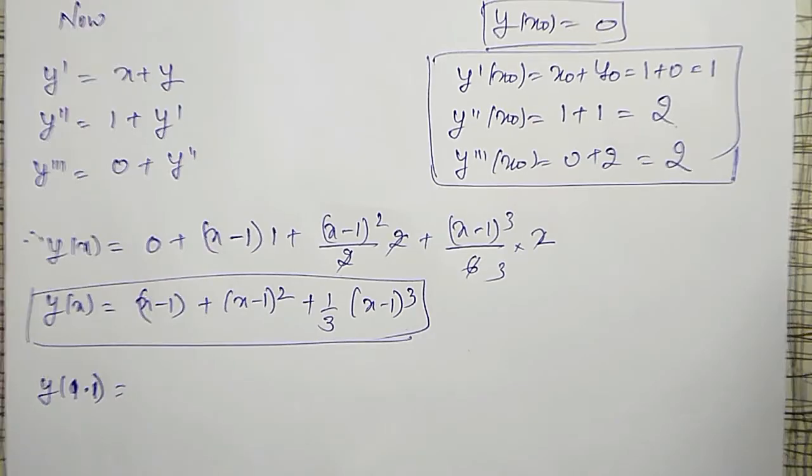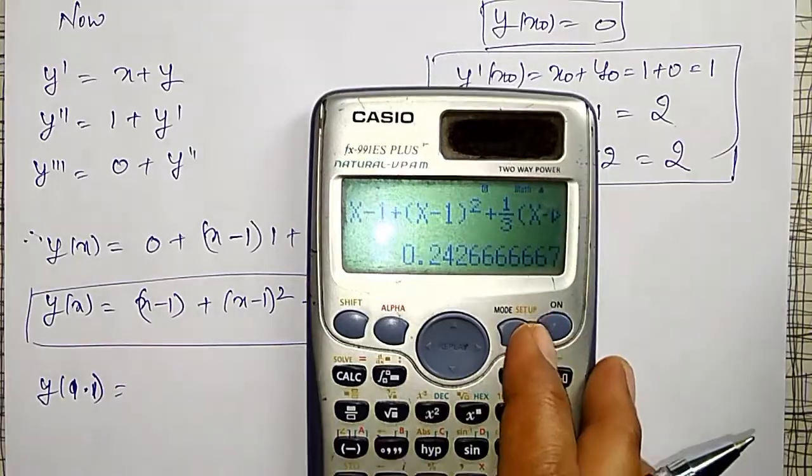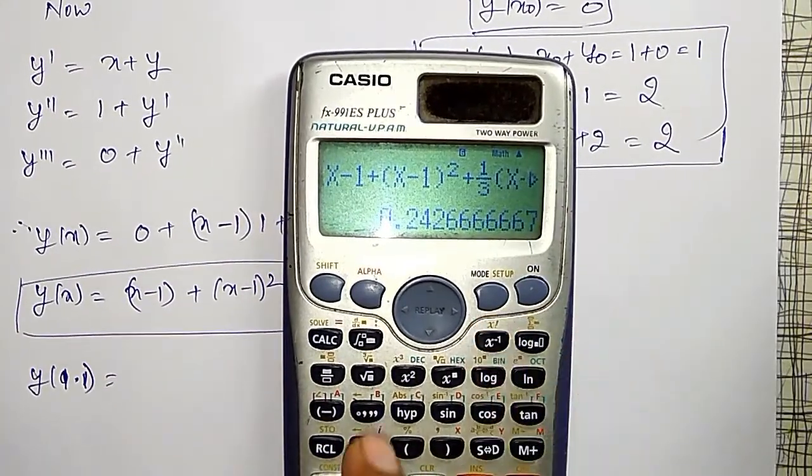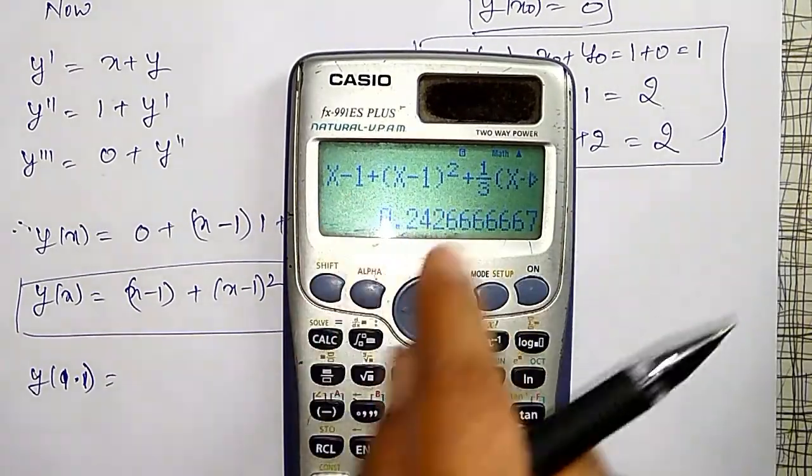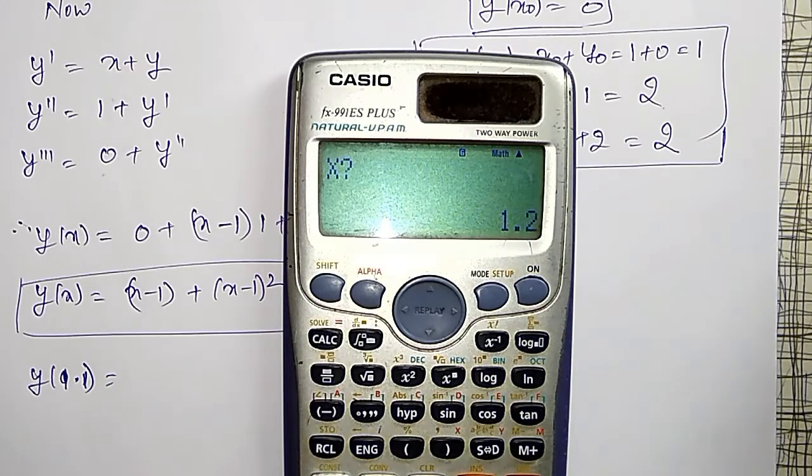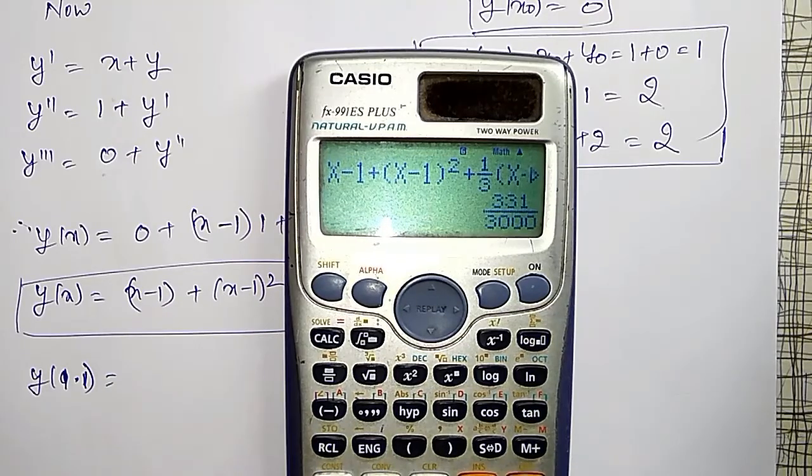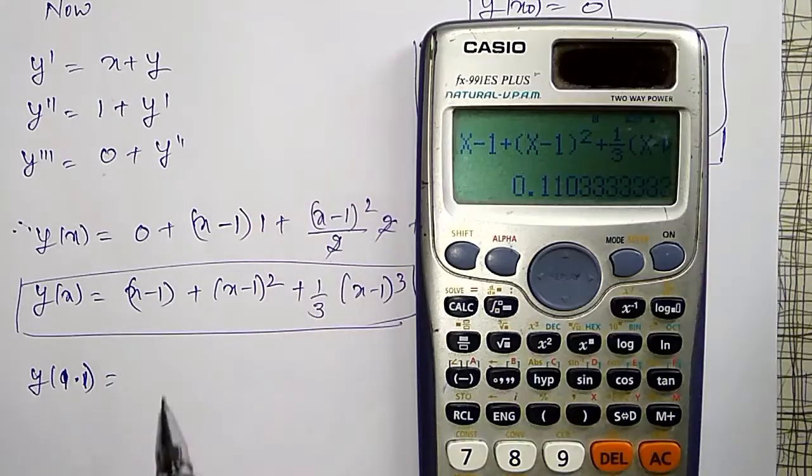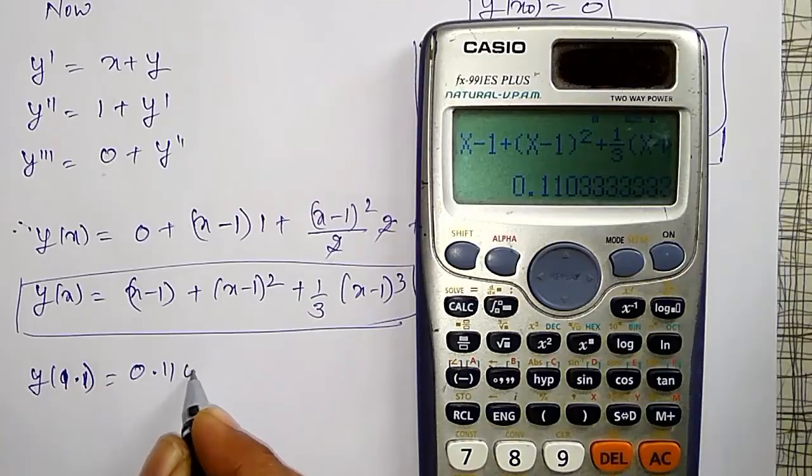For that, let me use a calculator and operate using alpha x as it is this equation. Then, first time, a calc option, it will ask for x, x = 1.1. I am going to get it as 0.11033.